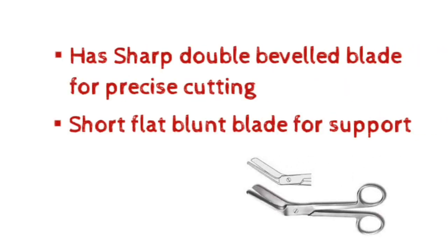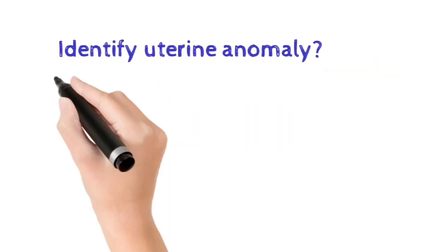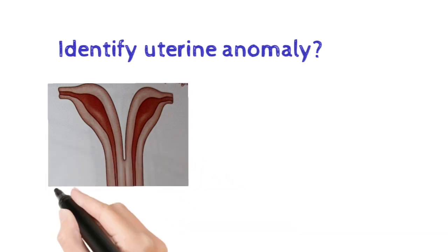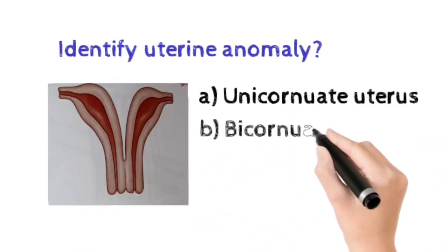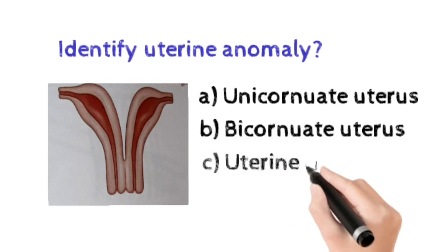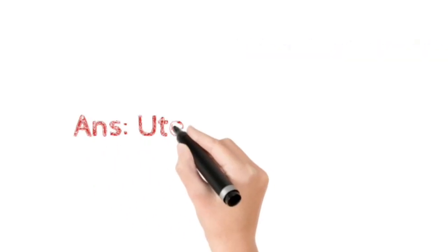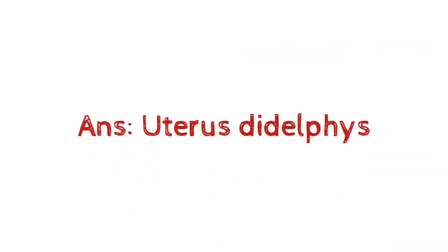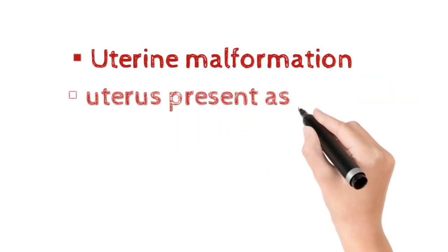Number seven: identify the uterine anomaly. Option A: Unicornuate, Option B: Bicornuate uterus, Option C: Uterus didelphys, Option D: Septate uterus. The correct answer is Option C, uterus didelphys. It's a uterine malformation where the uterus is present as a paired organ due to the failure of embryogenetic fusion of Müllerian ducts.